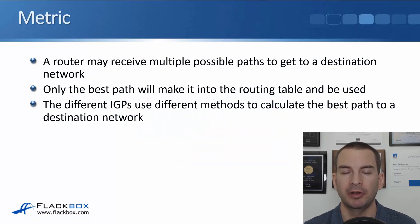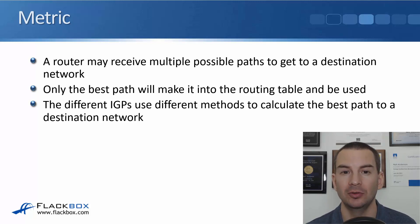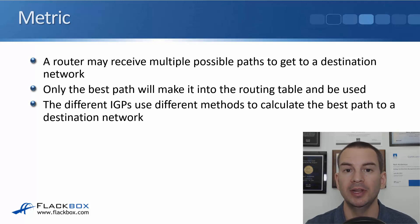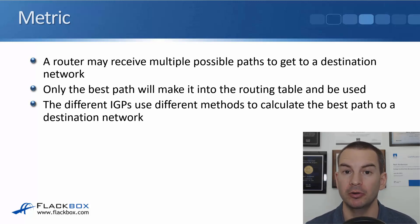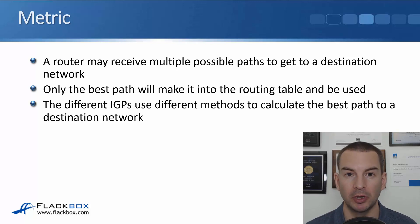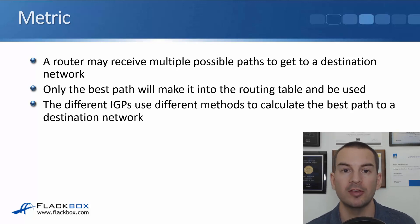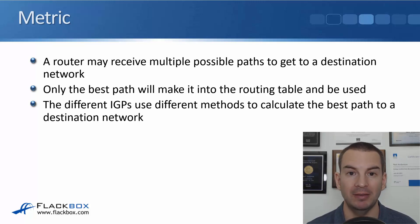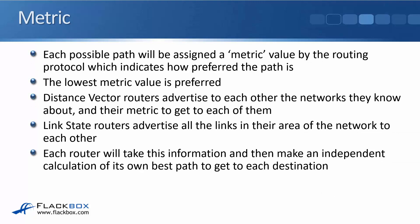In this lecture, you'll learn about routing protocol metrics. A router may receive multiple possible paths to get to a destination network because it might have multiple neighbouring routers with paths available through all of them. Only the best path out of all the ones that the router knows about is going to make it into the routing table and be used. Each possible path will be assigned a metric value by the routing protocol which indicates how preferred the path is, and the lowest metric value is preferred. High numbers are bad, lower numbers are better.